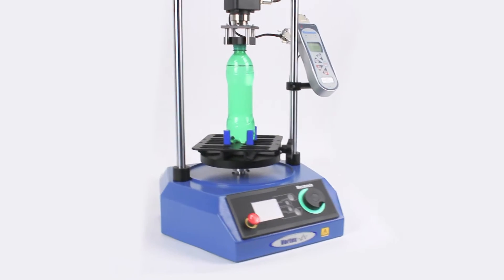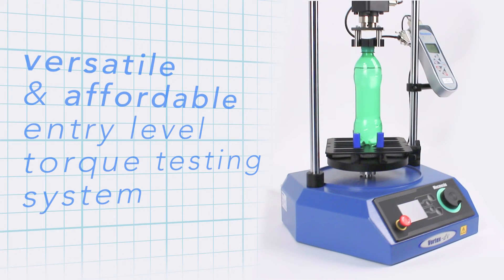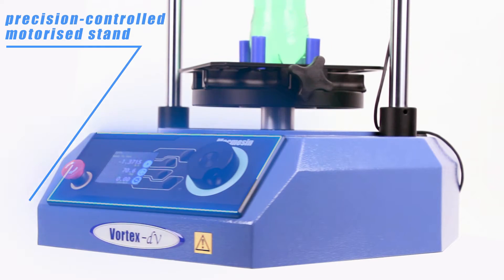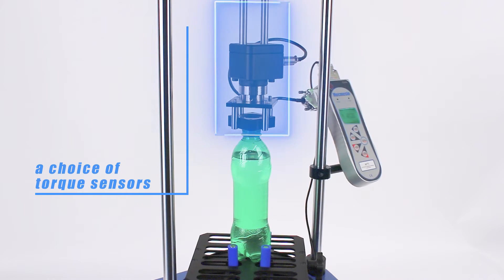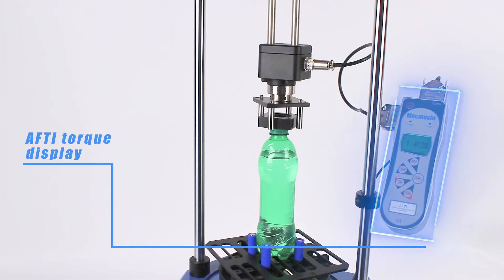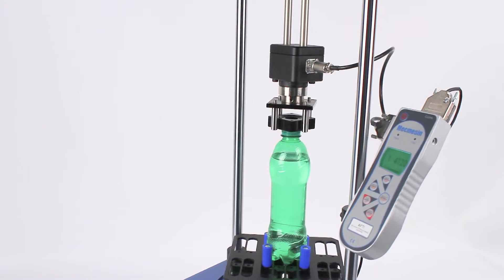The versatile and affordable Vortex DV is the latest entry-level torque testing system from Mecmezin. Combining a precision-controlled motorized stand with a choice of torque sensors and an AFTI torque display, Vortex DV is simple to use but delivers repeatable testing with accurate results while protecting the operator from repetitive strain injury.